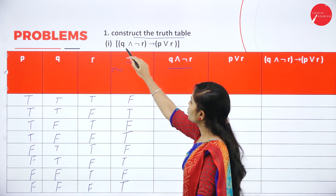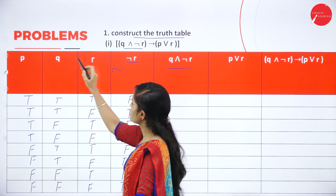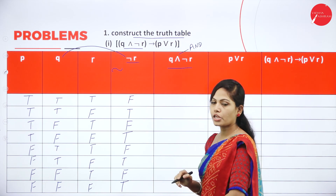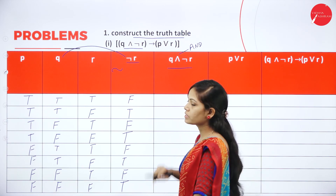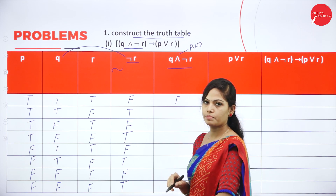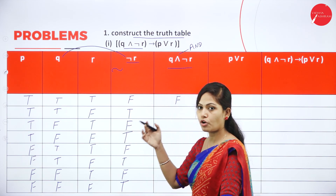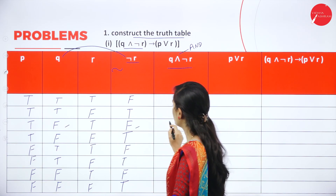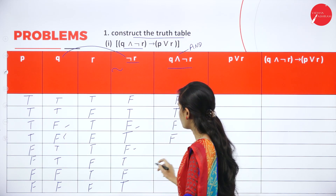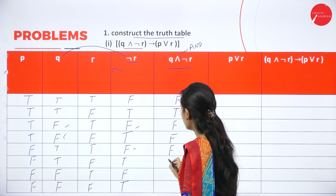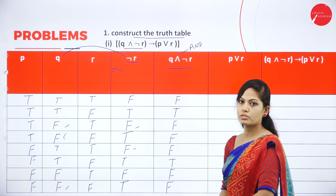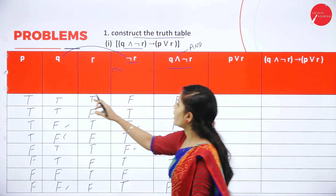Next, find Q ∧ ¬R. Consider the Q column and ¬R column with the AND operation. In AND operation, if any one of the statements is false, the condition is also false. Both conditions false means false; any one false means false; true AND true means true.